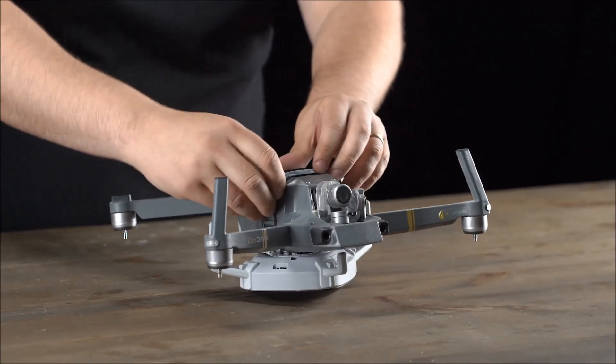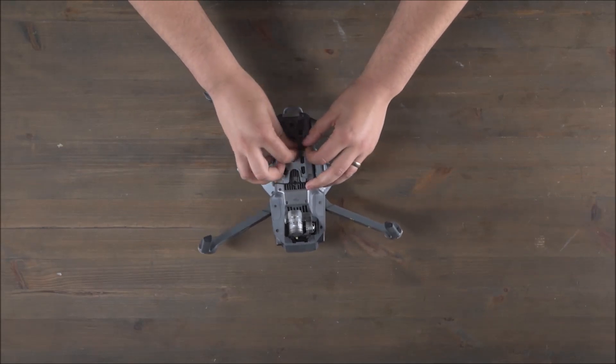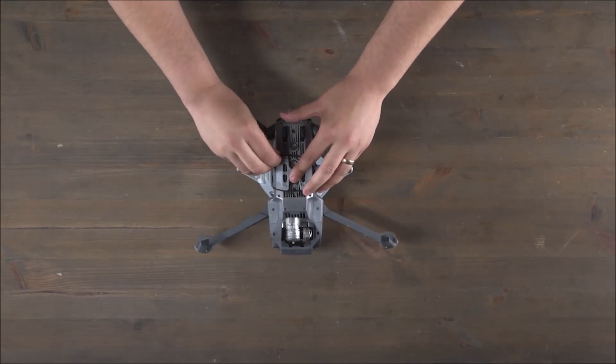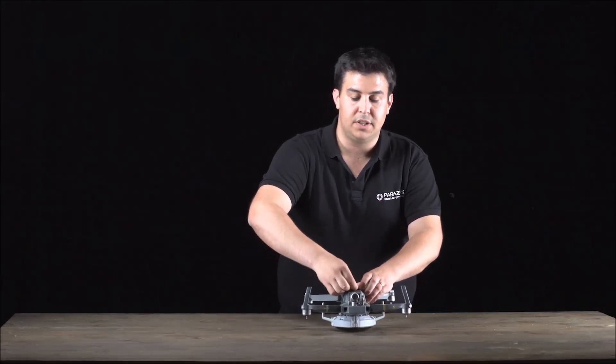Now, make sure that the strings underneath are not obstructing your sensors. Pull them to the side so that they're sitting like this. If you're unable to do this, then you should loosen your SafeAir Mavic.